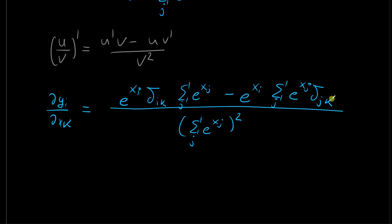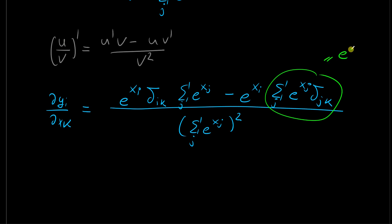We now have two Kronecker deltas that typically induce an index change. For the second Kronecker delta: the sum over j of e raised to x_j times delta_{jk} collapses to e raised to x_k, since delta_{jk} is one when j equals k and zero otherwise. For the first Kronecker delta delta_{ik}, we cannot perform an index swap because both i and k appear on the expression, so we must keep it.